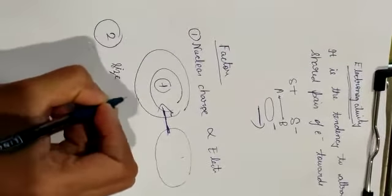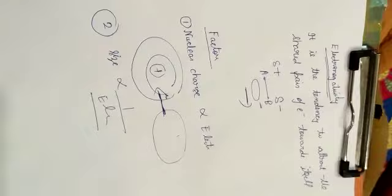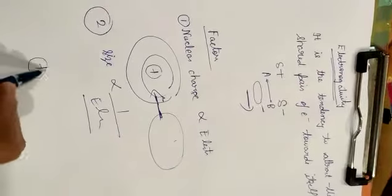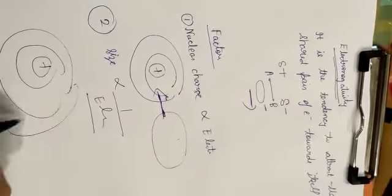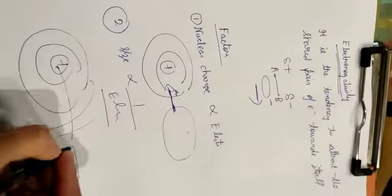If we talk about size, it will be inversely proportional to electronegativity. Because if size is more, the atom's pull on its electrons is less. So how can it attract other electrons?